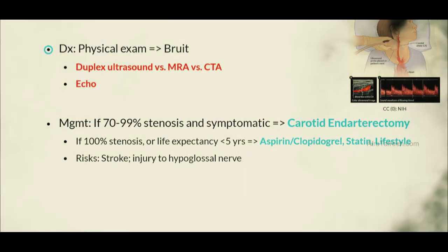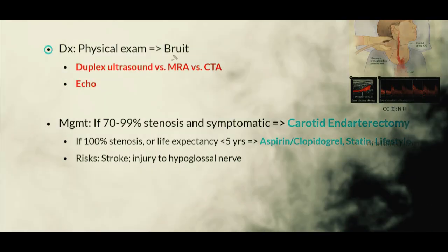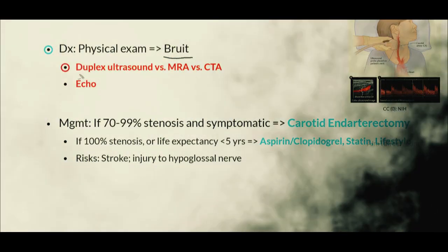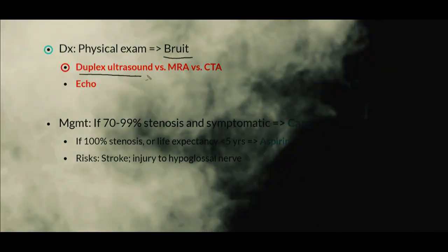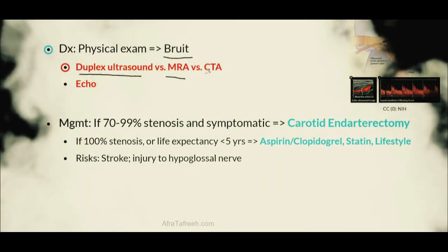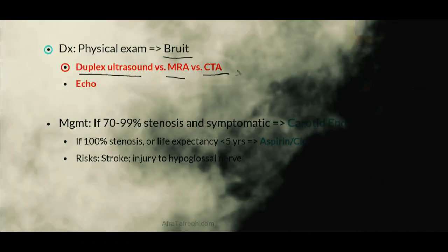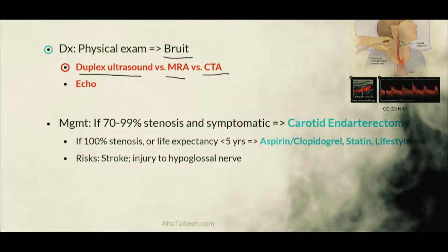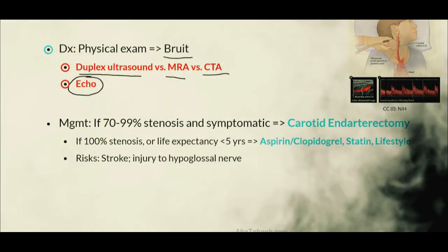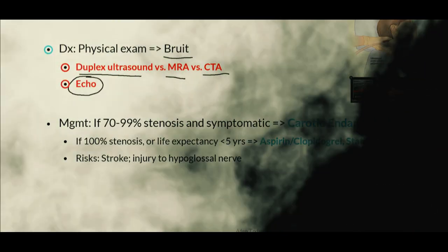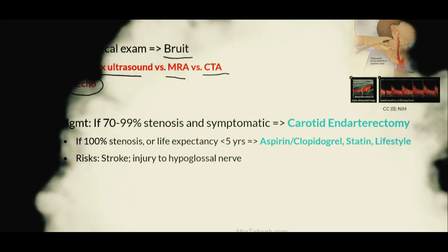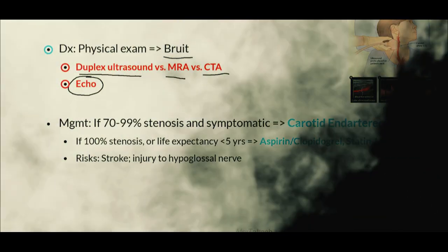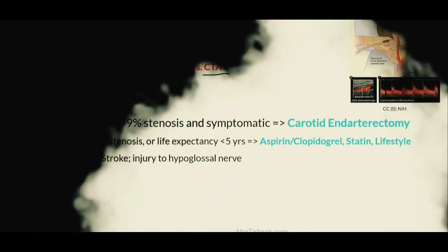On physical exam, patients with carotid stenosis are classically going to have a bruit at that location. Additionally, we should perform a duplex ultrasound, and in some cases may also get an MRA or CTA to evaluate the vasculature of the head and neck. Because these patients may present with TIAs or strokes, we will often also perform an echo to rule out potential heart disease as a contributor. In the following slides, we will go into more detail regarding the exact cutoffs in male and female patients.